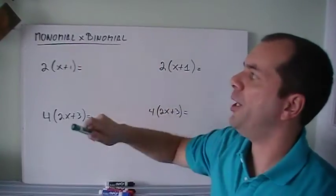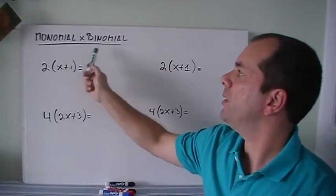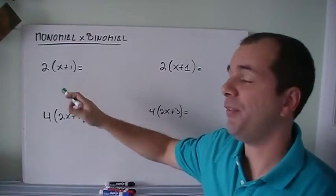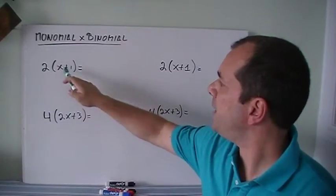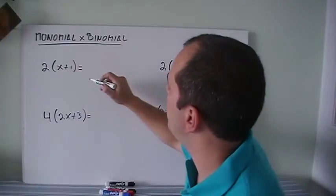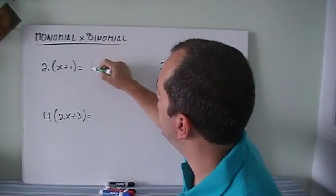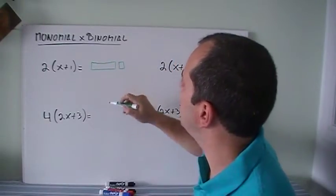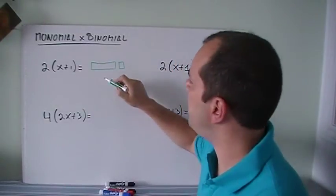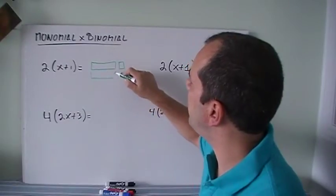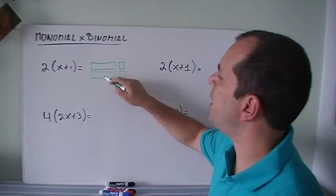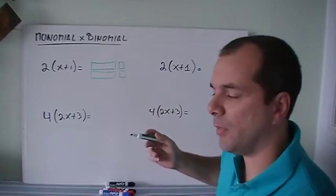A monomial times a binomial, so one term times two terms. How do we do this in algebra tiles first? Well, x plus 1 would be something like this. The long tile, the slim tile, plus a simple one. If I had two of those, that means I'm going to have another long tile, another one over here. So that means it's 2x plus 2. Okay, that was pretty easy.